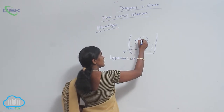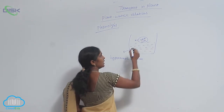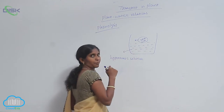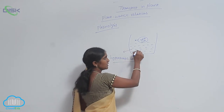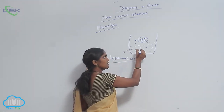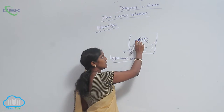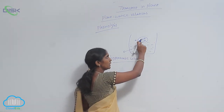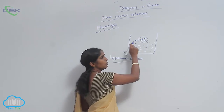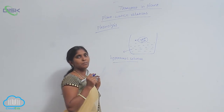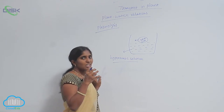Within the cell, the solute concentration is less and water potential is high. But in hypertonic solution, the water concentration is less and the solute concentration is more. In this condition, the water is moved from high water potential to low water potential through the plasma membrane, through the semi-permeable membrane. This leads to shrinkage of the cell.